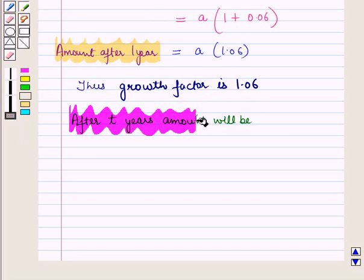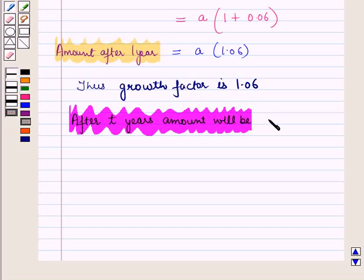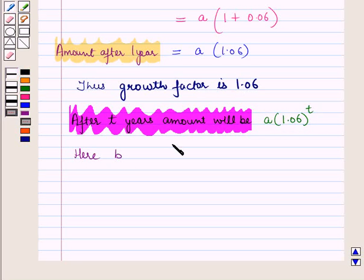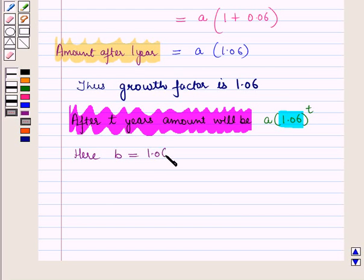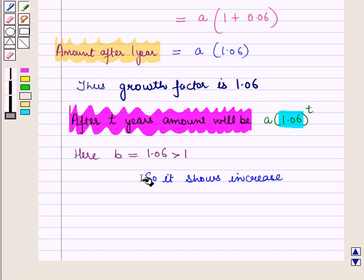After T years, the amount will be A into 1.06 raised to power T. Here B is 1.06, which is greater than 1, so it shows increase or growth.